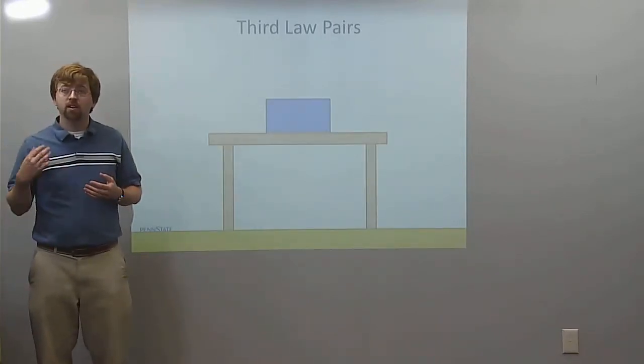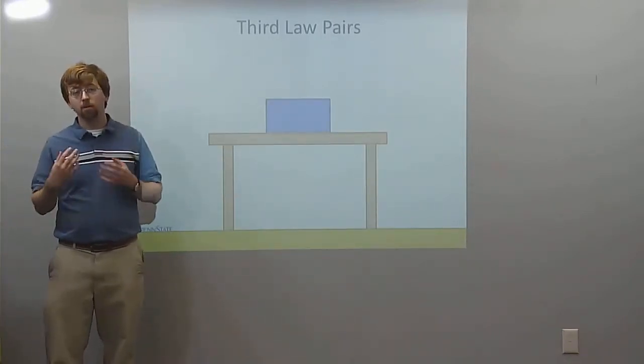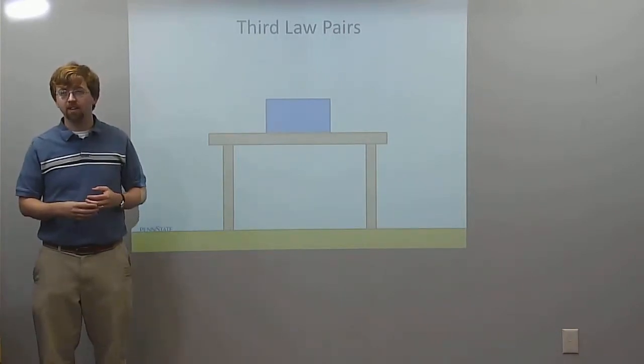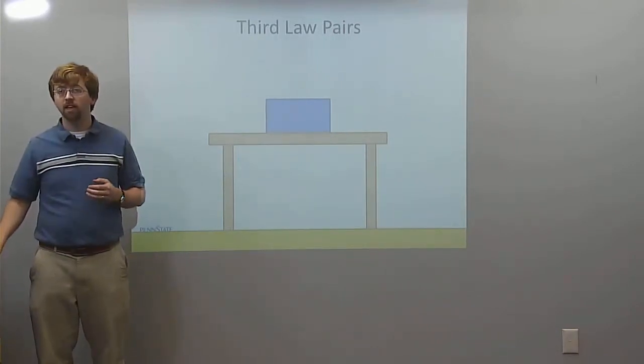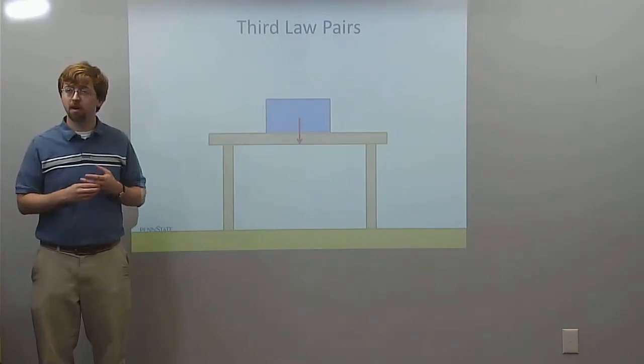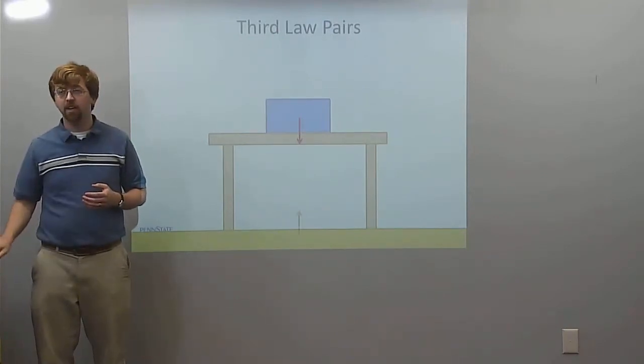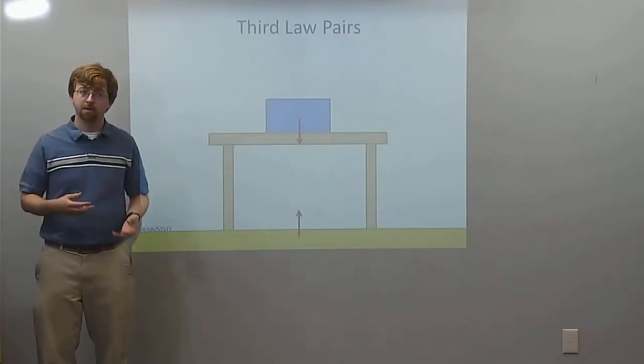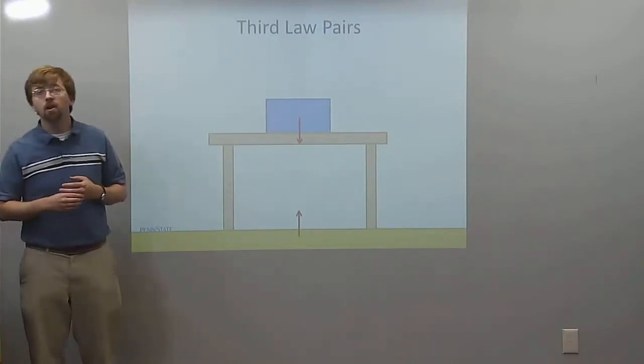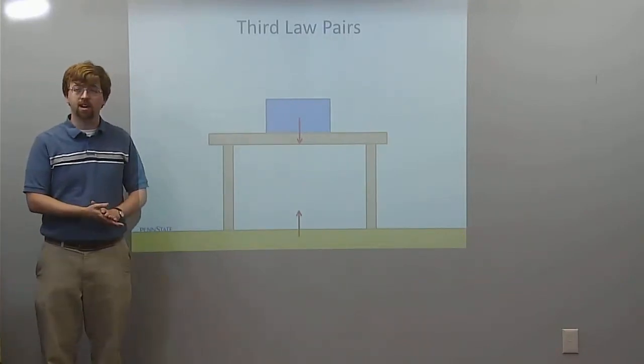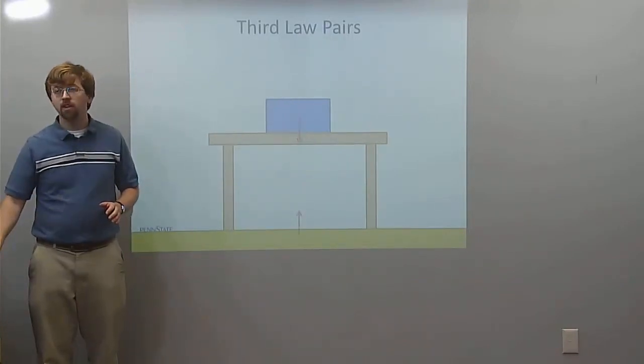Here we've got a box sitting on a table. So we've got a couple of Newton's Third Law pairs acting right here actually. If we think about gravity pulling the box down, there's actually a gravitational force on the Earth exerted by the box pulling the Earth up. But the Earth is so large we tend to not notice that. So that's one pair.